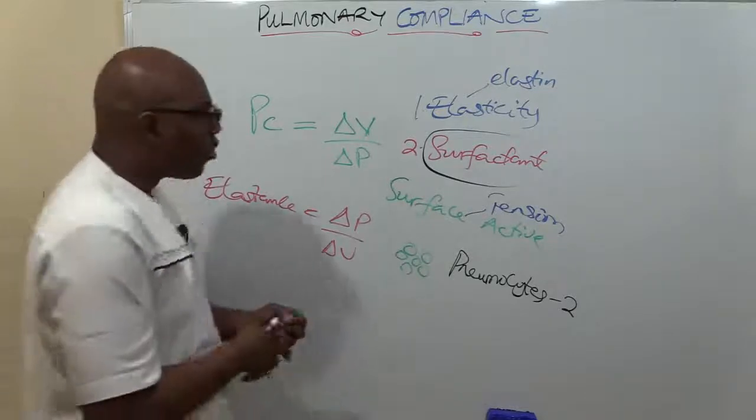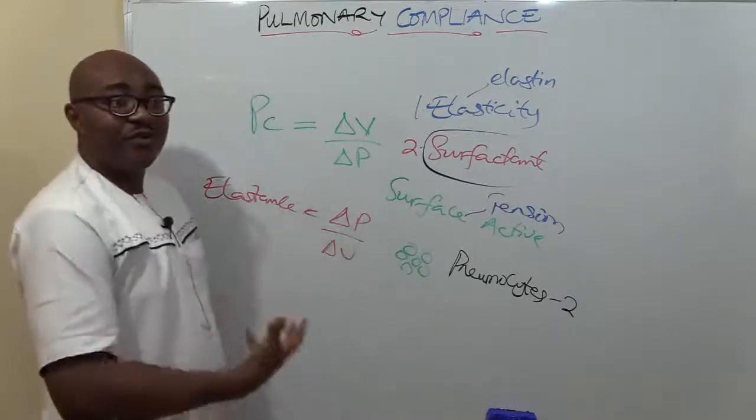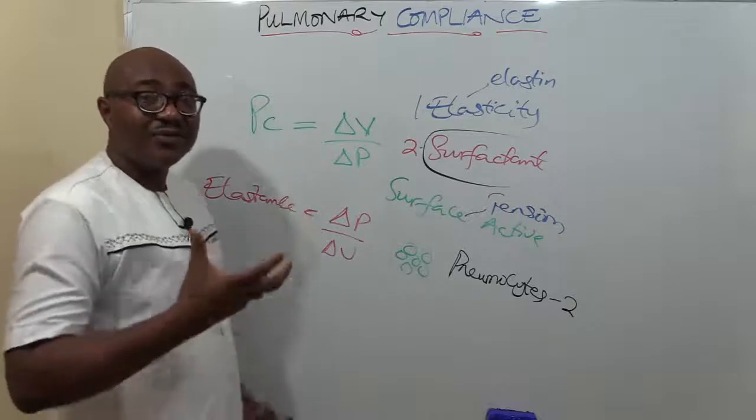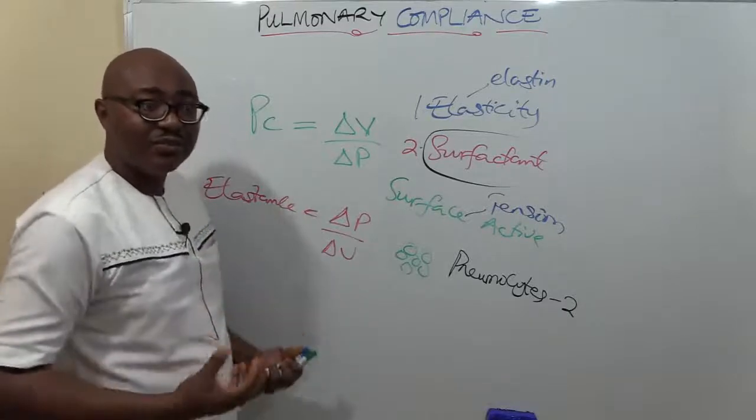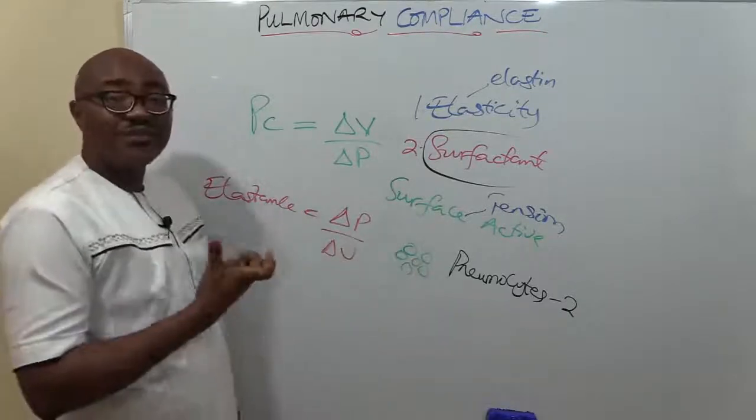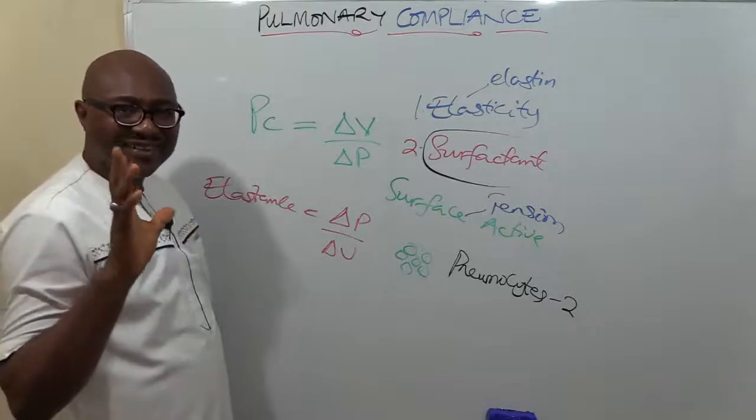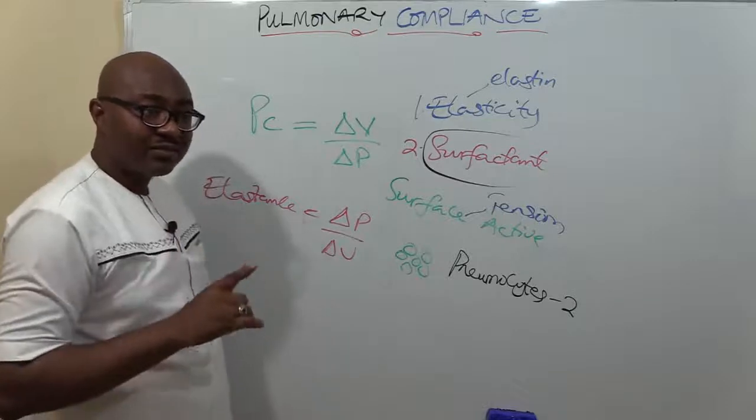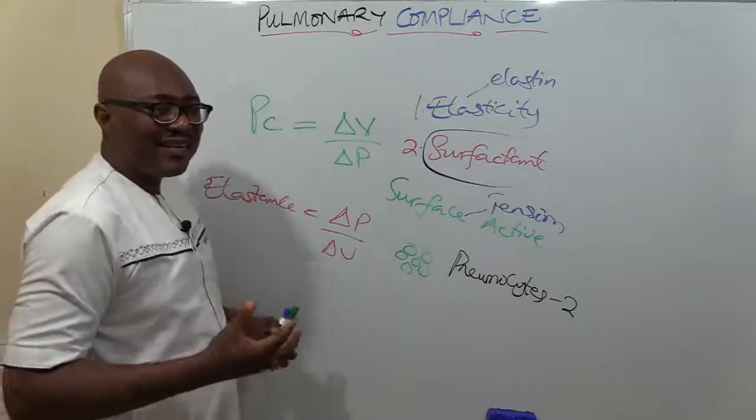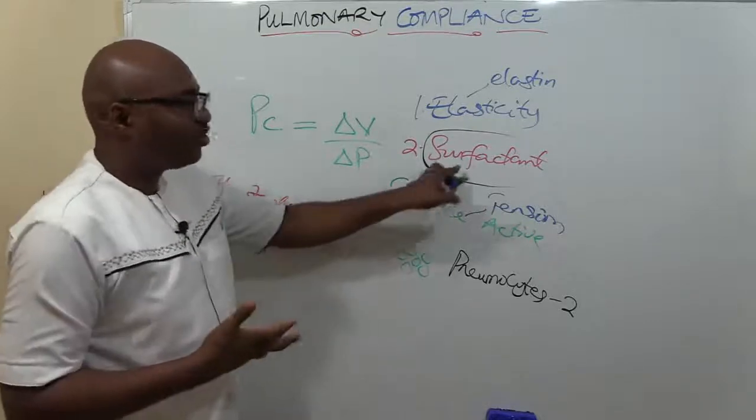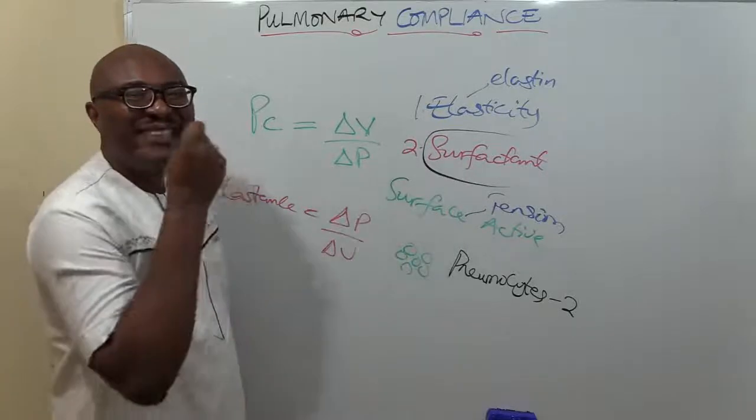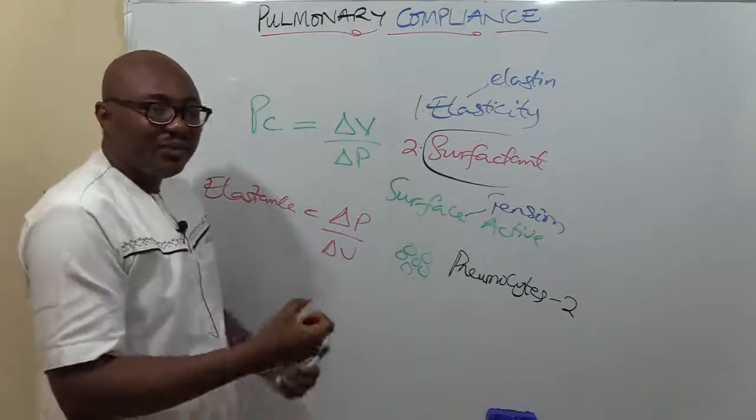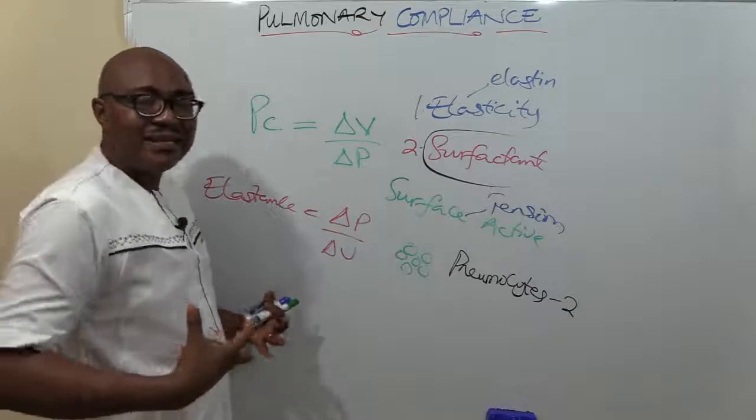Right from the womb, from around six months when a baby is in the womb, that's when these pneumocytes start producing surfactant. That's why premature infants, a baby that's born prematurely, don't have enough surfactant, so they have difficulty in breathing because there's difficulty in expanding the lungs.